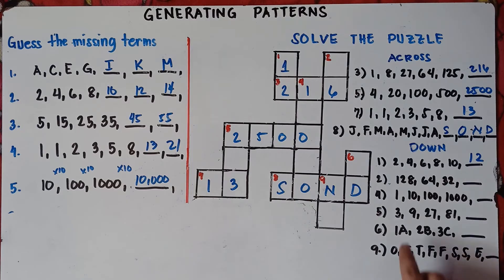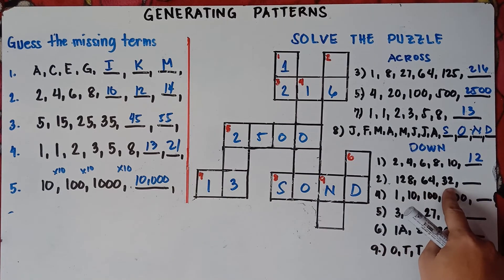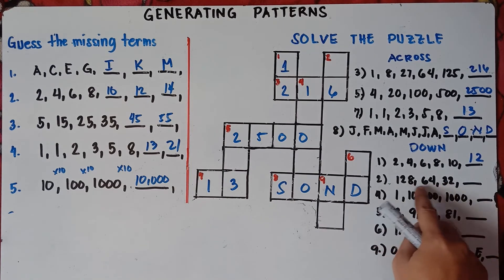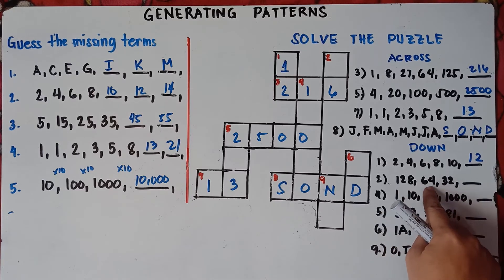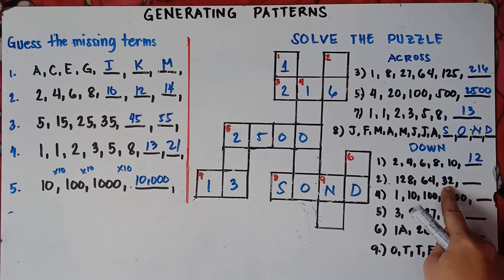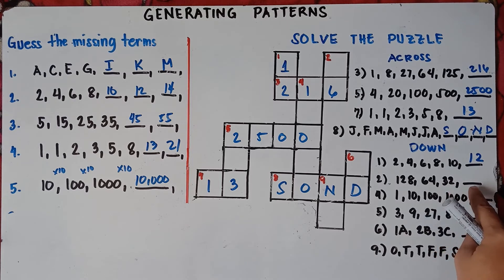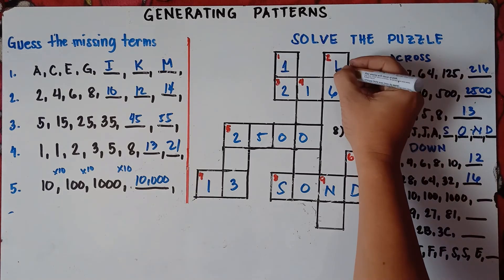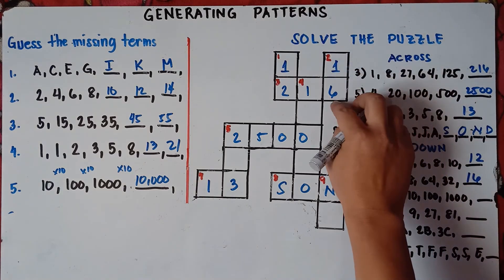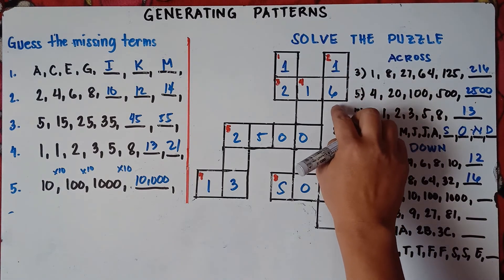For number 2 down: 128, 64, 32. You divide by 2. 128 divided by 2 is 64, 64 divided by 2 is 32, 32 divided by 2 is 16. Number 2 down is 16.